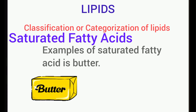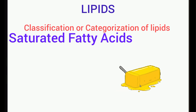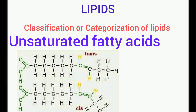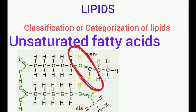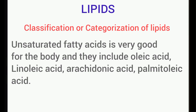An example of a saturated fatty acid is butter. They are actually solid at room temperature. The unsaturated fatty acids possess a double bond, and unsaturated fatty acids are divided into two types: the cis unsaturated fatty acid and the trans unsaturated fatty acid. The cis unsaturated fatty acids possess hydrogen on the same side of the double bond, while the trans unsaturated fatty acids possess hydrogen on the opposite side.